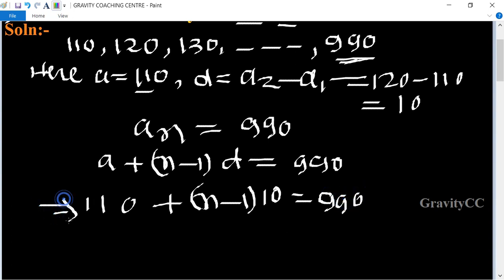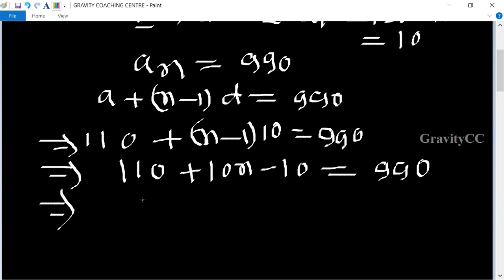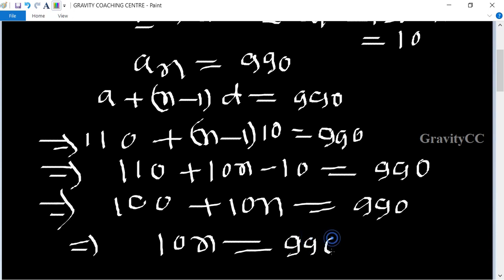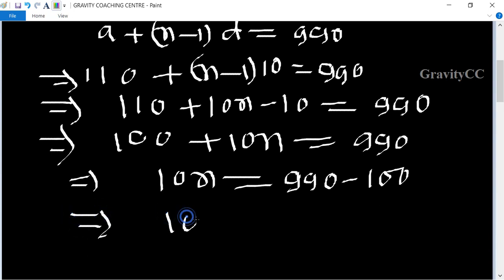This implies that 110 plus 10n minus 10 equals 990, which implies 100 plus 10n equals 990. Therefore, 10n equals 990 minus 100, which implies 10n equals 890.